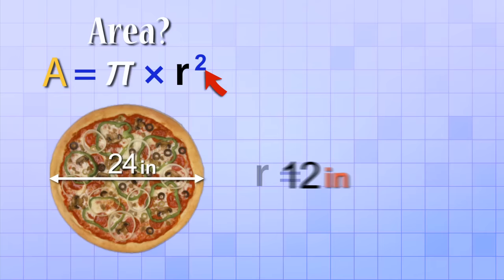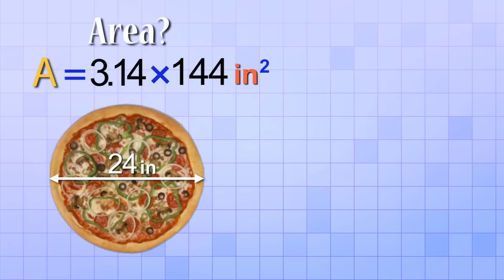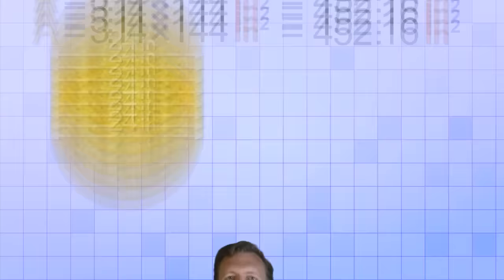And now that we know the radius, we need to square it. 12 inches times 12 inches equals 144 inches squared. Next, we just multiply that by Pi. 144 times 3.14 is 452.16. So the total area of the pizza is 452.16 square inches.